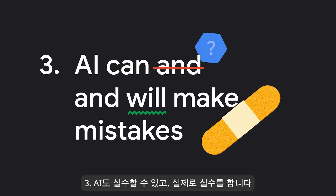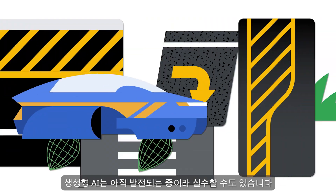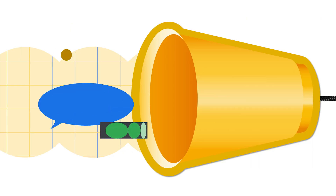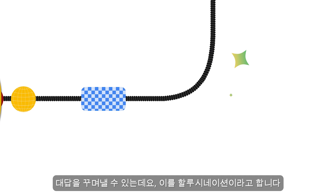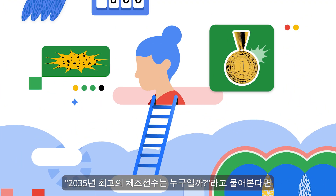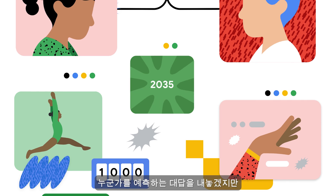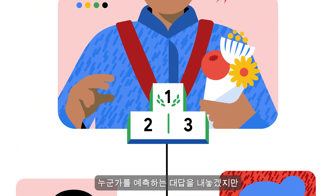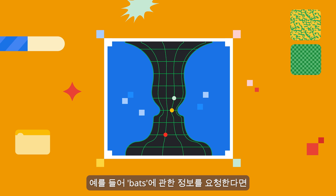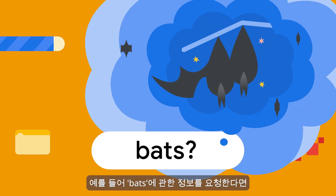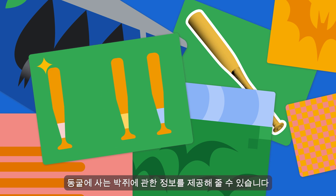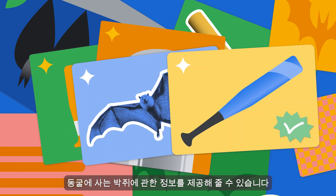AI can and will make mistakes. Generative AI is a work in progress, and it can make mistakes — it may make things up. This is known as a hallucination. Say you ask who will be the top gymnast in 2035; the response may predict someone, even though there is no way to truly know. It may also misunderstand things. For instance, if you ask for information about bats, it might tell you about the type used in baseball or those winged mammals that live in caves.